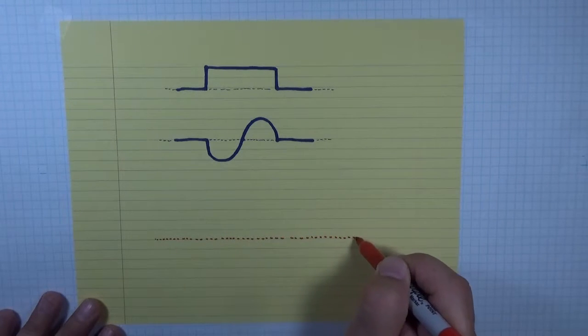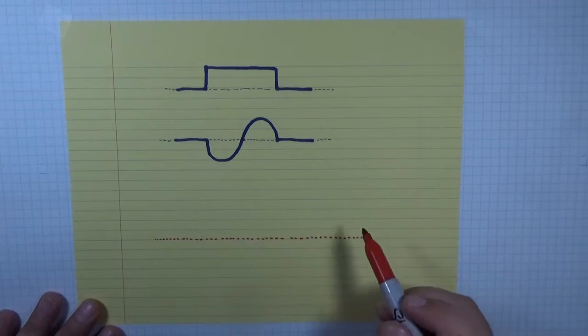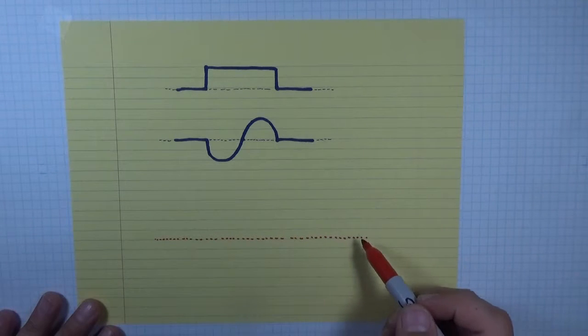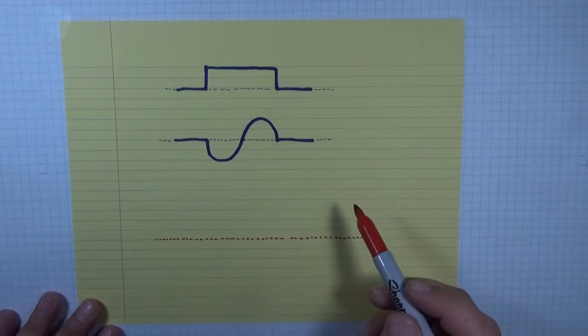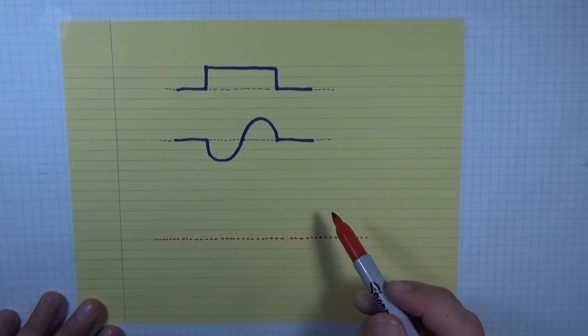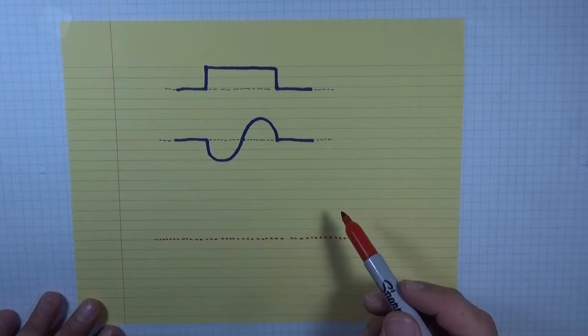When you're adding wave shapes in particular, the equilibrium line is really important because that's the line that defines where the wave pulses are added in reference to.